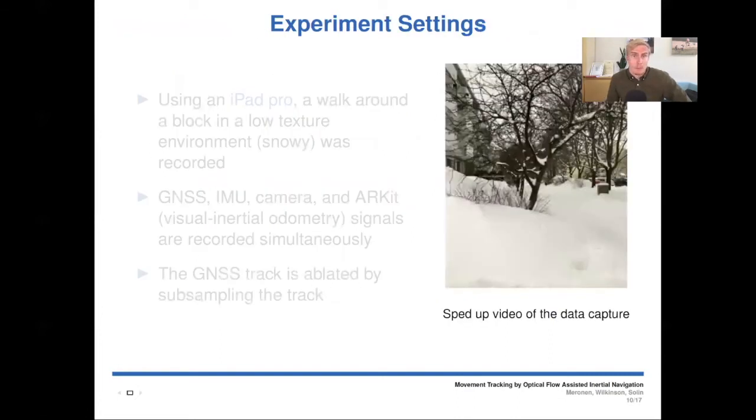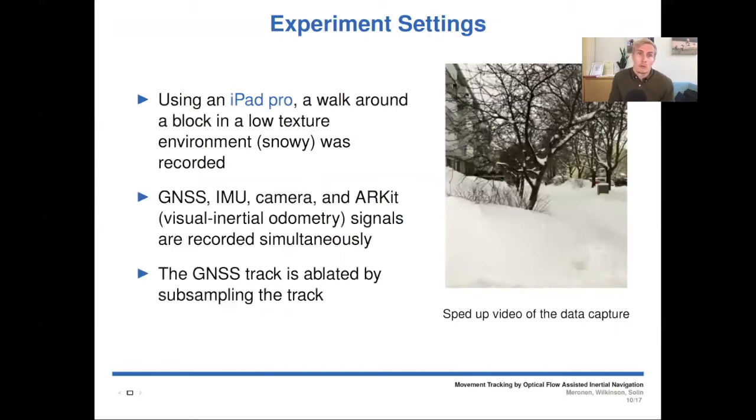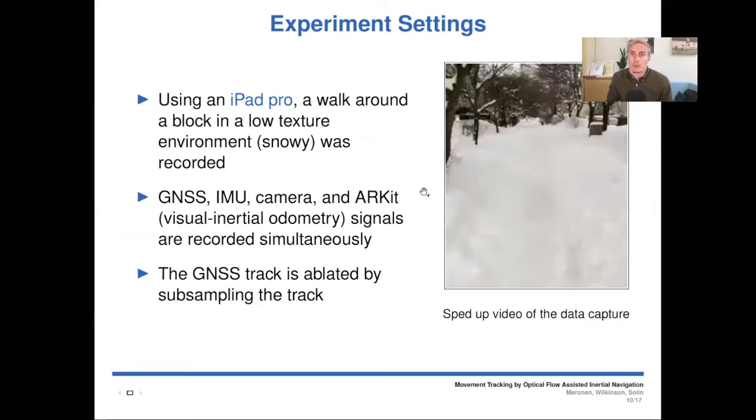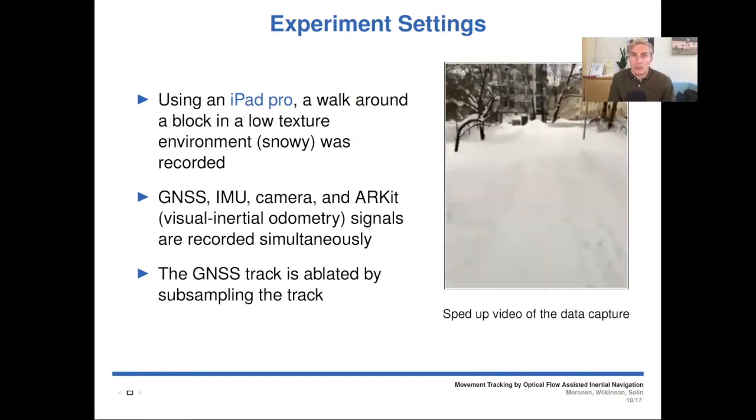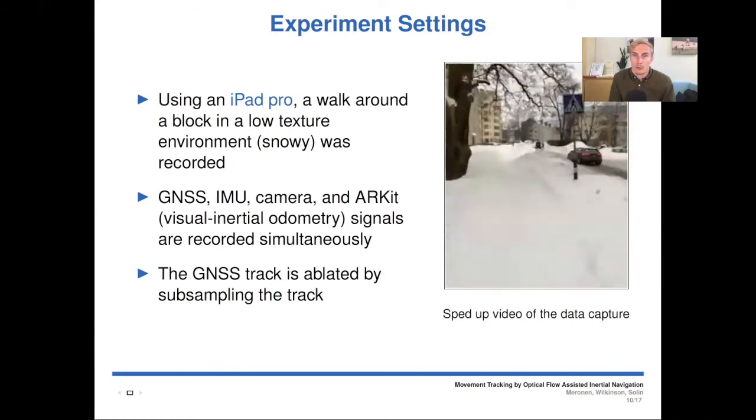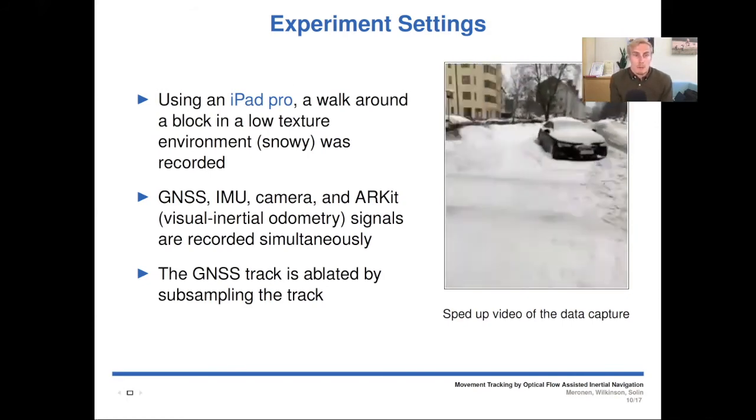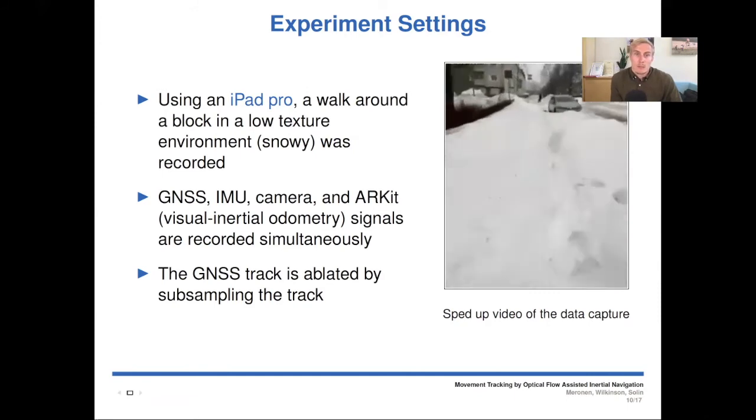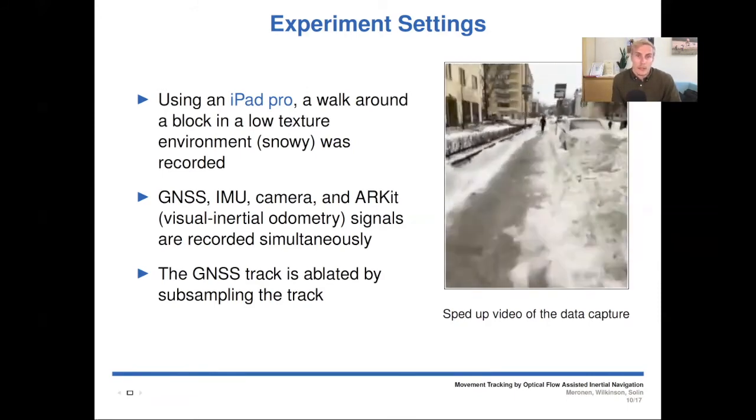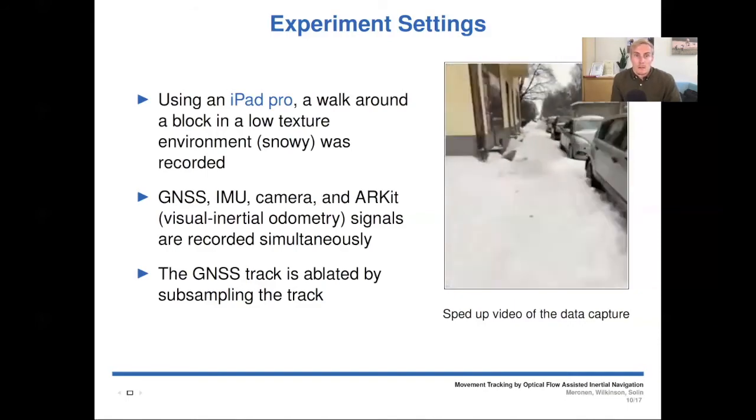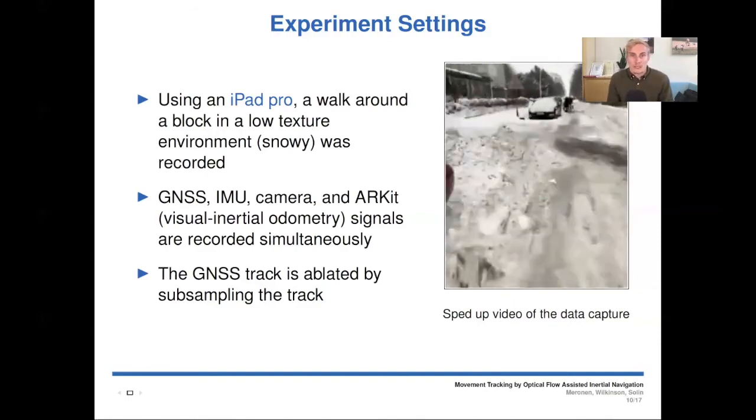Then our experiment setting. We are using an iPad Pro to walk around the block in a low texture environment, which is snowy. And here we have an example video capture in 10 times speed, which is the video from this experiment capture. And during this capture, GNSS, IMU, camera and ARKit signals are recorded simultaneously. And ARKit is a visual inertial odometry method, which we use as a baseline method.